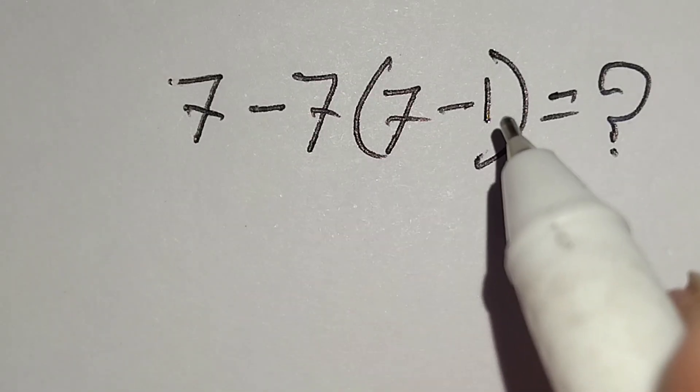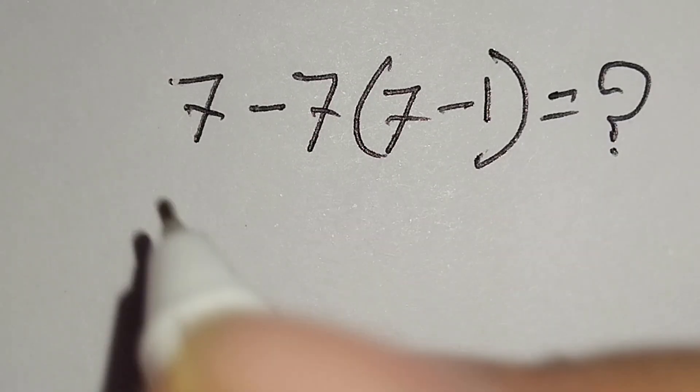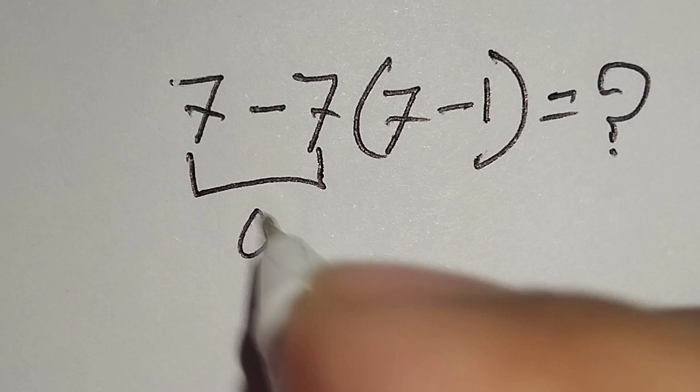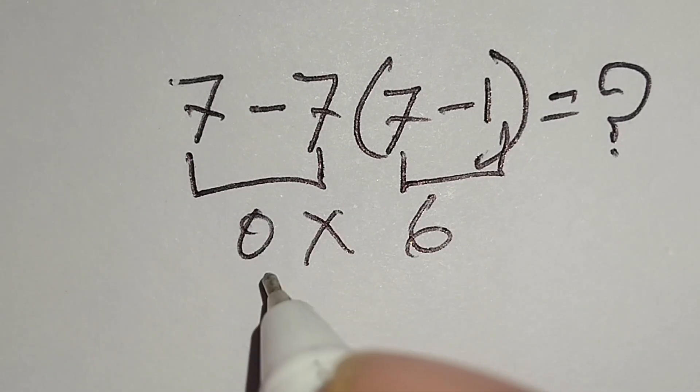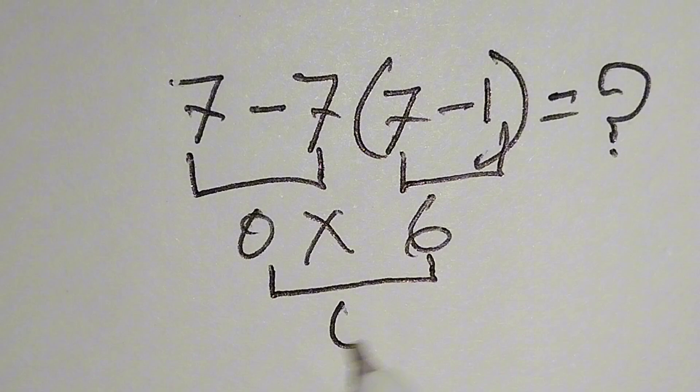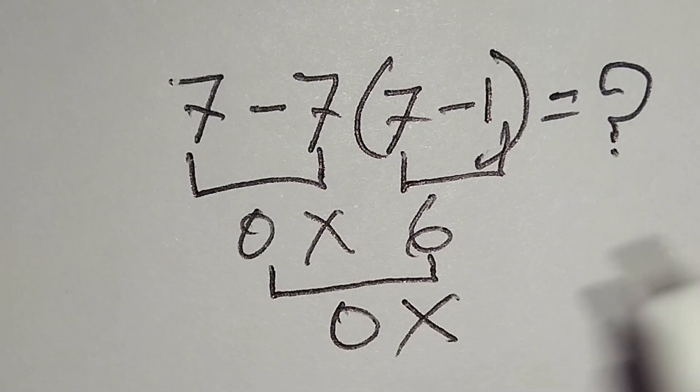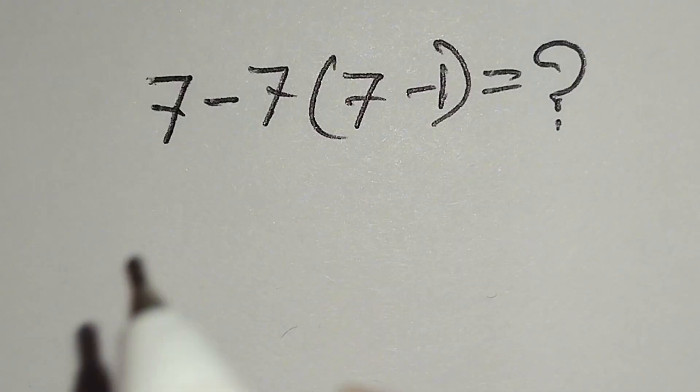7 minus 7 bracket 7 minus 1 equals what? Here 7 minus 7 gives us 0, multiply by 7 minus 1 gives us 6, 0 multiply 6 gives us 0. But it is not correct. Now I will apply PEMDAS rule to solve this math correctly.